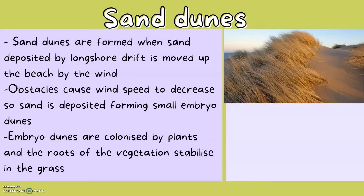Sand dunes are formed when sand, deposited by longshore drift, is moved up the beach by the wind. Obstacles cause wind speed to decrease, so sand is deposited, forming small embryo dunes.